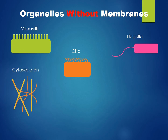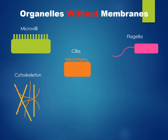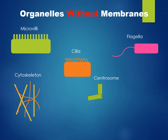The cytoskeleton is composed of microtubules and microfilaments. The cytoskeleton gives the cell structural support and can assist in the movement of cellular structures. Centrosomes serve as the microtubule organizing center and are utilized during chromosome separation in cell division.